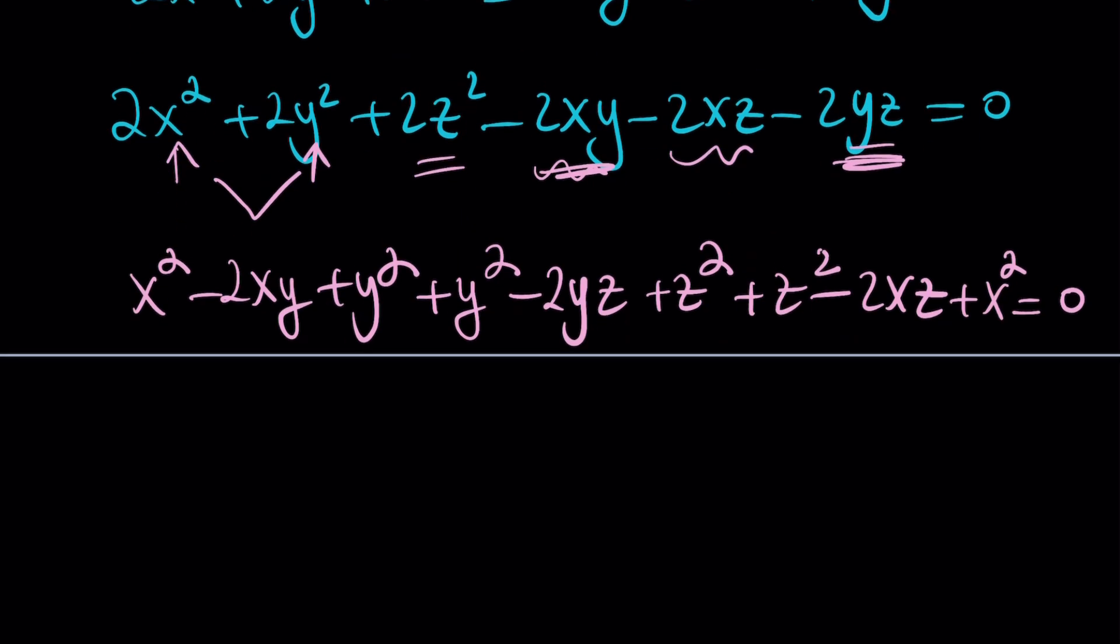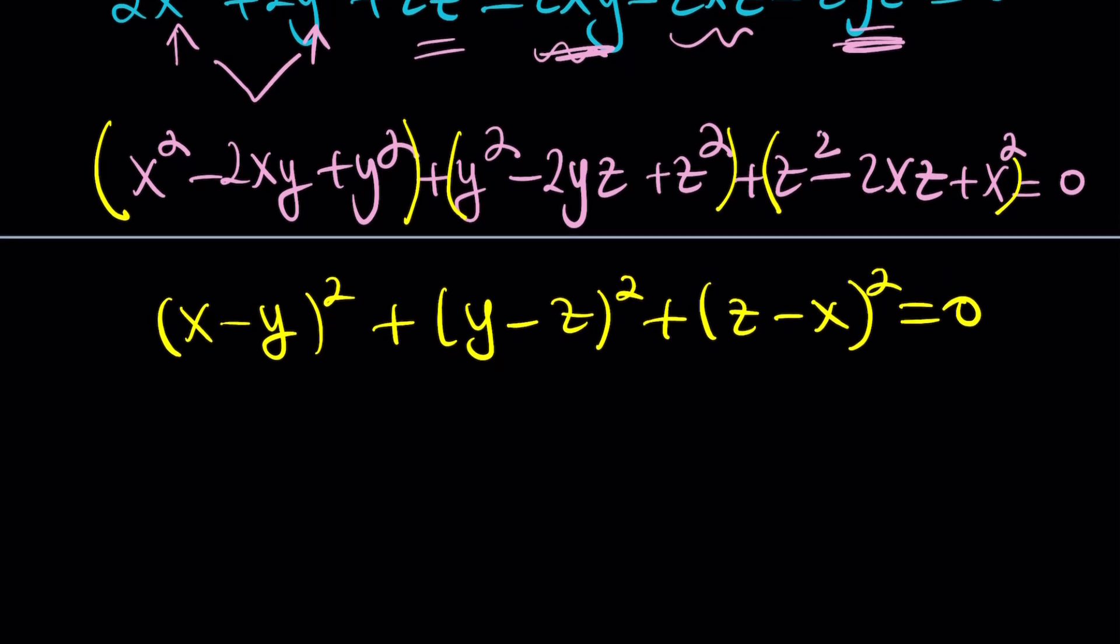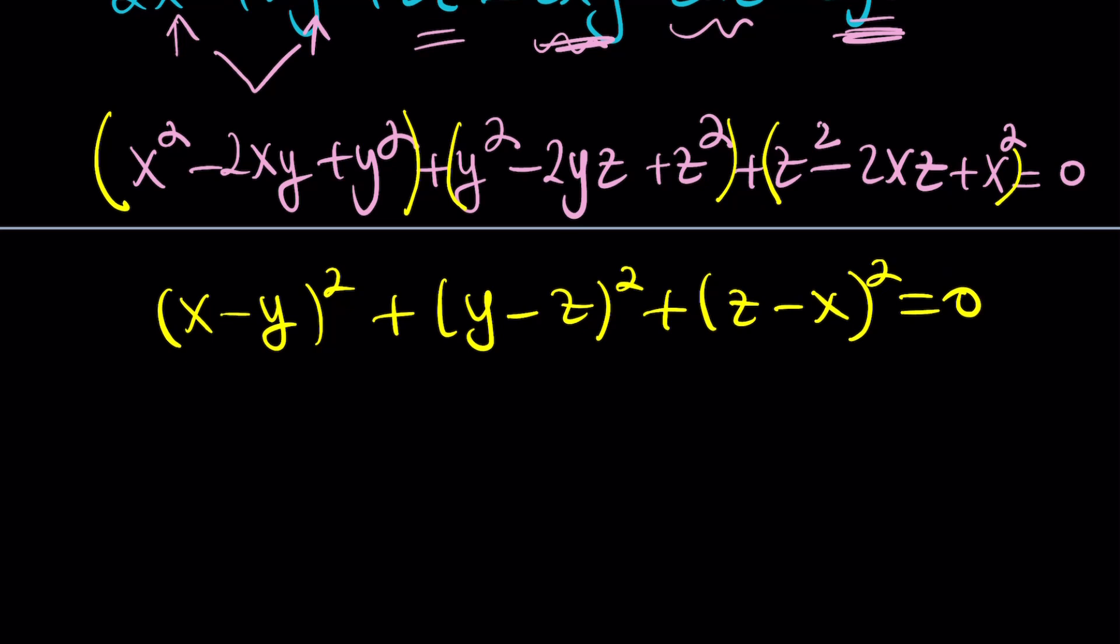Now, notice that this is actually a sum of three squares. Yes, x minus y squared plus y minus z squared plus z minus x squared. And we used this trick before. You'll probably remember. This is a very common trick that's used, especially for math competition contests or Olympiad problems. So a good intro.